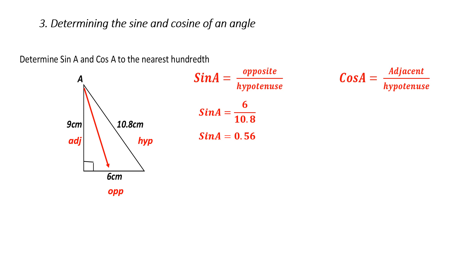Next, cos of A equals adjacent over hypotenuse. My adjacent is 9 and my hypotenuse is 10.8, so I substitute these values in. Since I'm looking for the ratio and not the angle, I don't need to punch in second function — I just divide 9 by 10.8, giving an answer of 0.83.